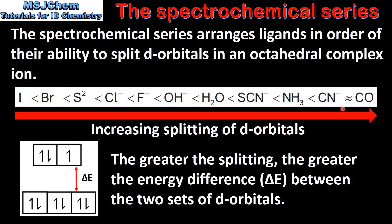Ligands that are higher up in the spectrochemical series, such as carbon monoxide, are known as strong field ligands. These ligands produce a greater splitting of the d orbitals. Those ligands lower down in the spectrochemical series, such as the iodide ion, are known as weak field ligands. These ligands produce a smaller splitting of the two sets of d orbitals.